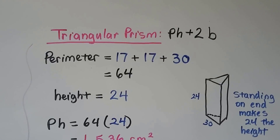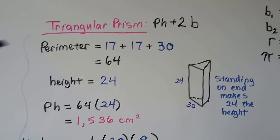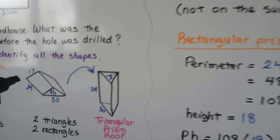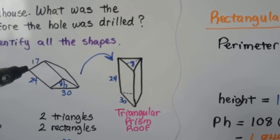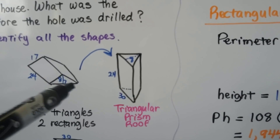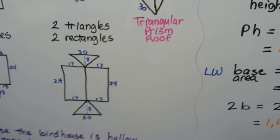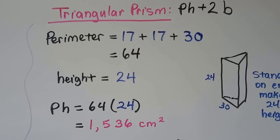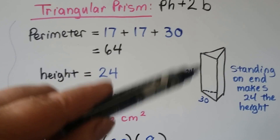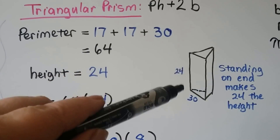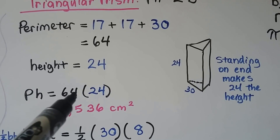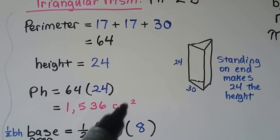Now we work on the triangular prism using pH plus 2B. The perimeter of the triangular cross-section is 17 plus 17 plus 30, giving us 64. Because we're standing the prism on one of the triangles, the height is 24. Perimeter times height is 64 times 24, which gives us 1,536 centimeters squared.